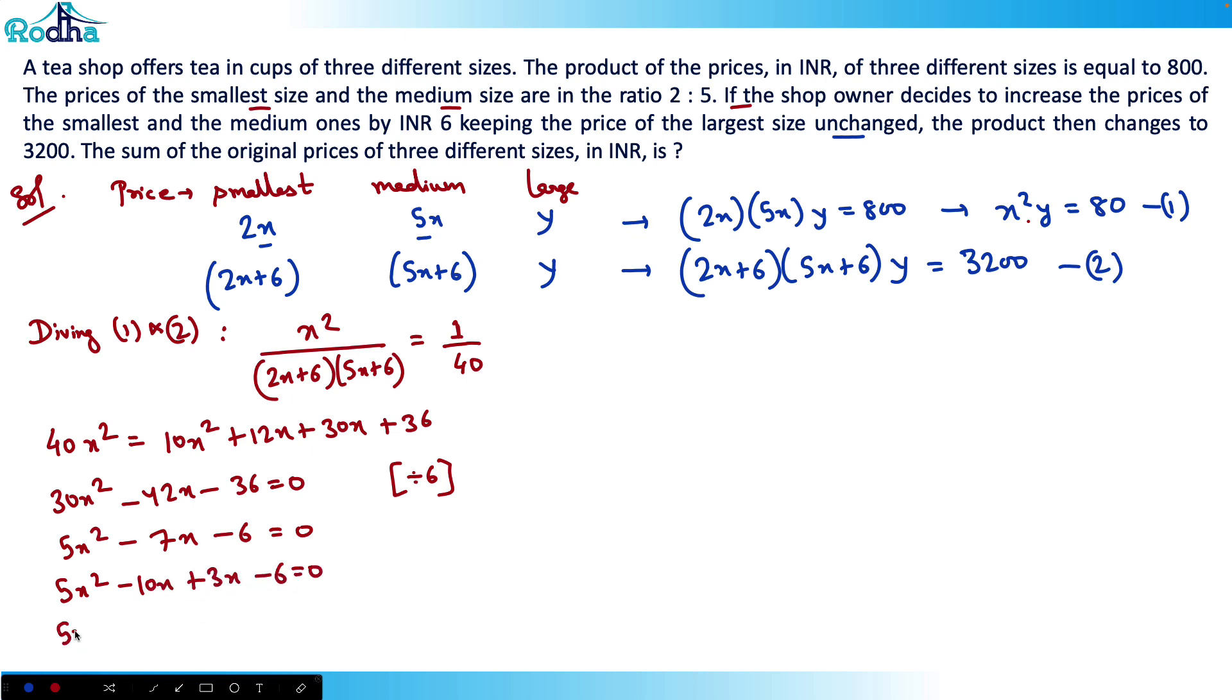5x(x - 2) + 3(x - 2) = 0, so that means (5x + 3)(x - 2) = 0.